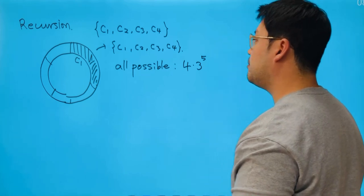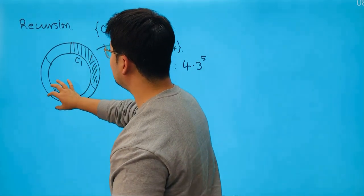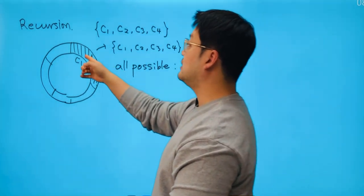all possible cases, then I would say I got 4 times 3 to the power of 5. That's going to be all possible cases because we can find four cases and three cases and three cases, three cases, three cases, and three cases. And the problem that we face is that there's going to be